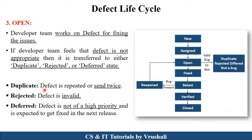Suppose the tester sends the same type of defect again to the developer — this is called the duplicate state. If the defect is invalid, that is the rejected state. And sometimes a defect is not of high priority, so it can be solved in the next release or next version of the software — this is called the deferred state.